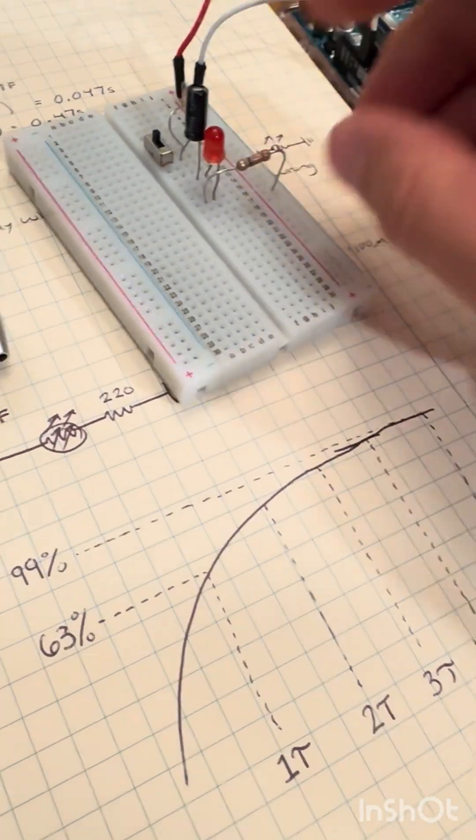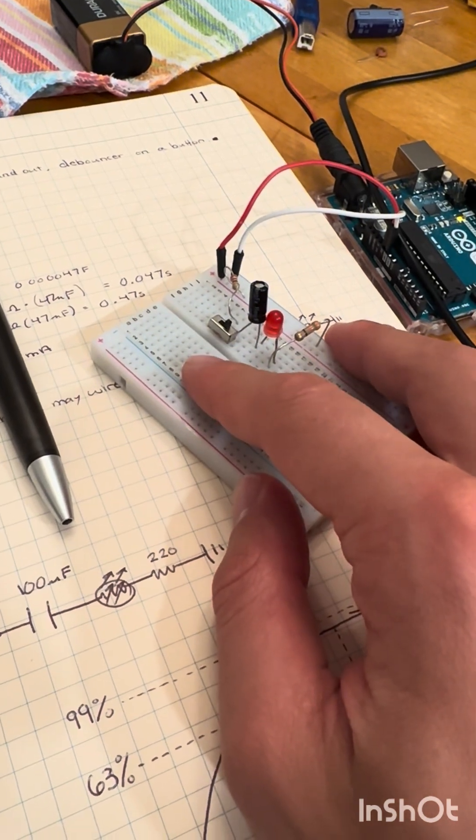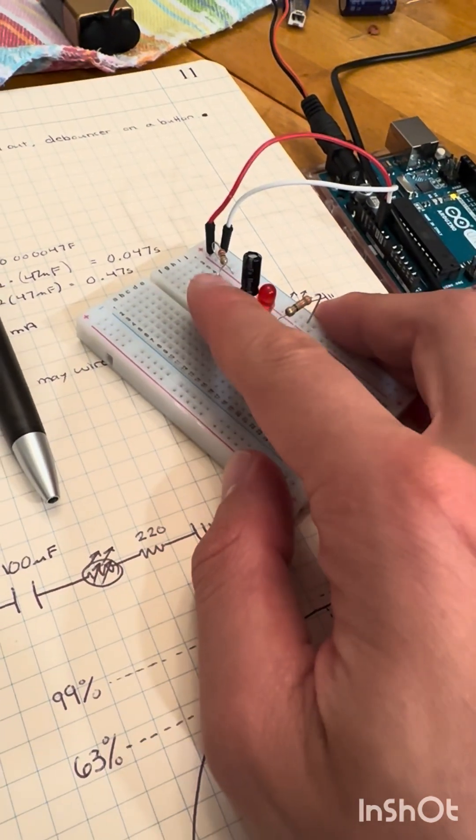we'll notice that the LED turns on for a split second and then shuts off, because capacitors are DC shorts.